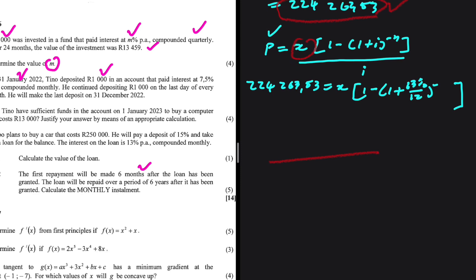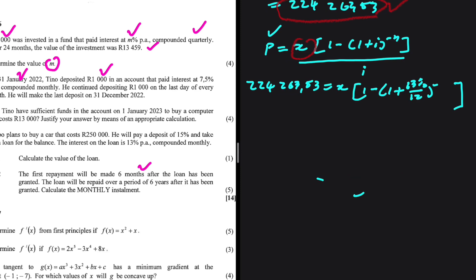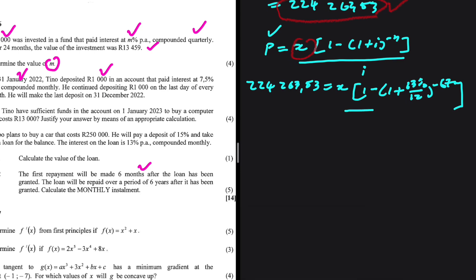The loan is repaid over six years. For the remaining five years that gives 5 × 12 = 60 payments. In the first year, assuming the loan is granted in January, no payment is made in January through May, but from June through December that is 7 payments. So total n = 60 + 7 = 67. This is a very common mistake — n is 67, not 66.